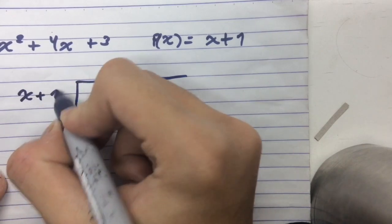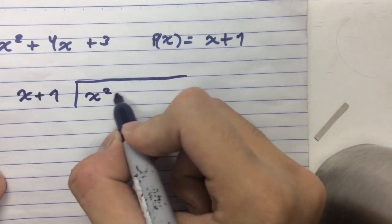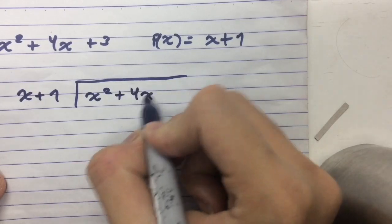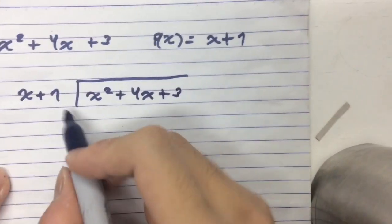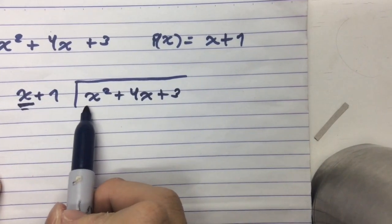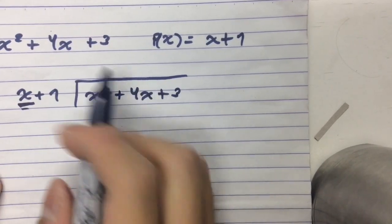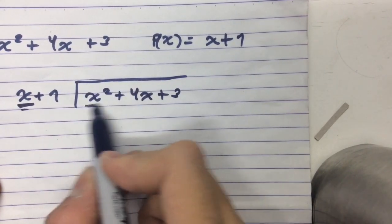I write the divisor over here and the dividend over here: x squared plus 4x plus 3. And what we do is we divide the first term of our divisor to each and every term. So let's start with x squared. So x squared divided by x.